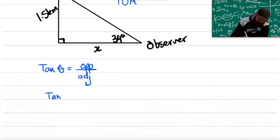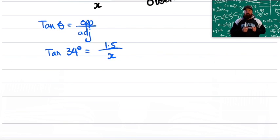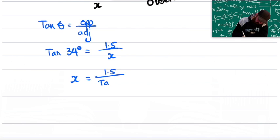Tan of 34 degrees is equal to the opposite side over the adjacent side. Remembering that when the denominator is our unknown, those two are just going to swap places. So x is going to be equal to 1.5 over tan of 34 degrees.